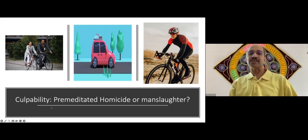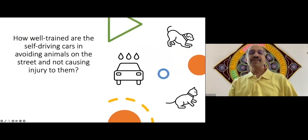So there are a lot of such ethical issues. And talking about self-driving cars, how well trained are the self-driving cars in avoiding animals on the street and not causing injury to them? So animal rights is a big social justice issue. Animals also have rights. And one of those rights is the right to life. So animal data set is very limited and training is very expensive. So in all likelihood, the self-driving cars may not have been trained on animal data sets. So it is unlikely that they are going to avoid animals on their way.